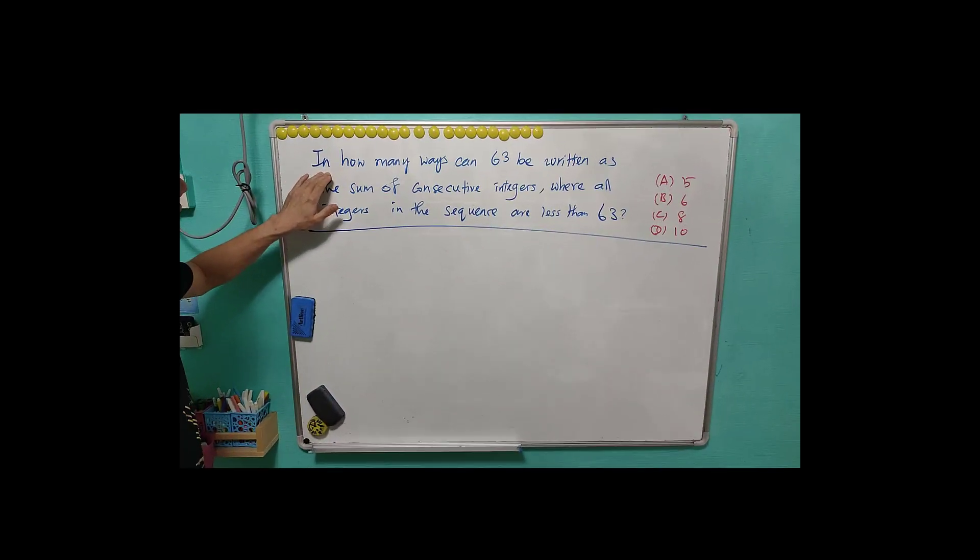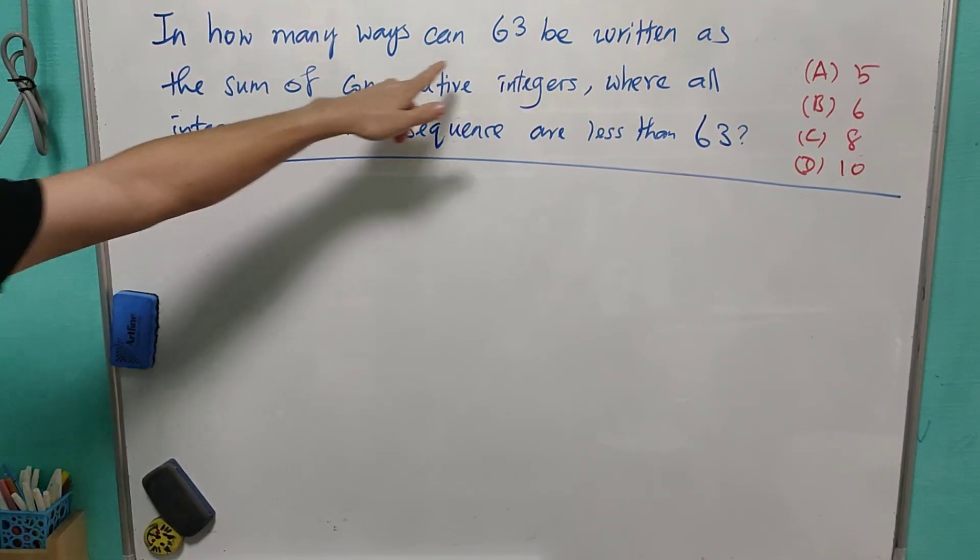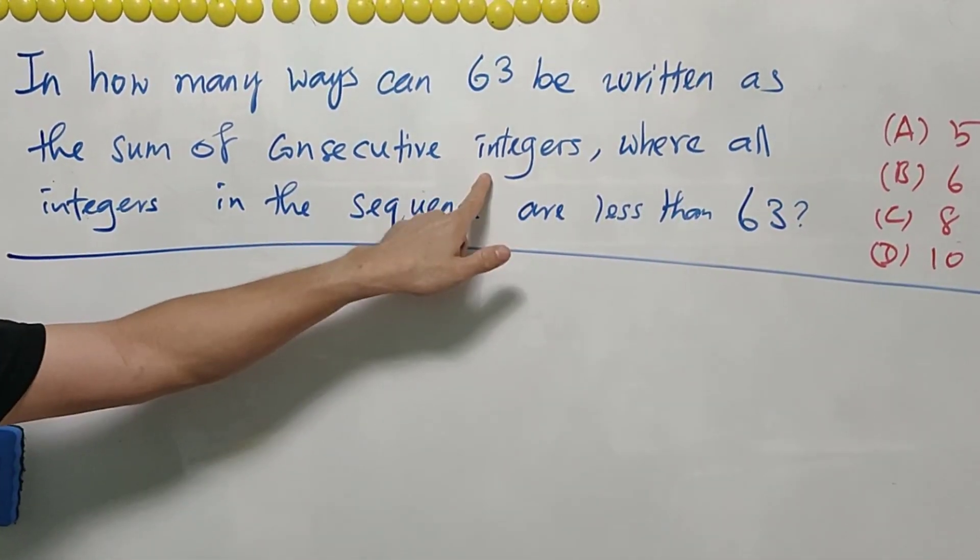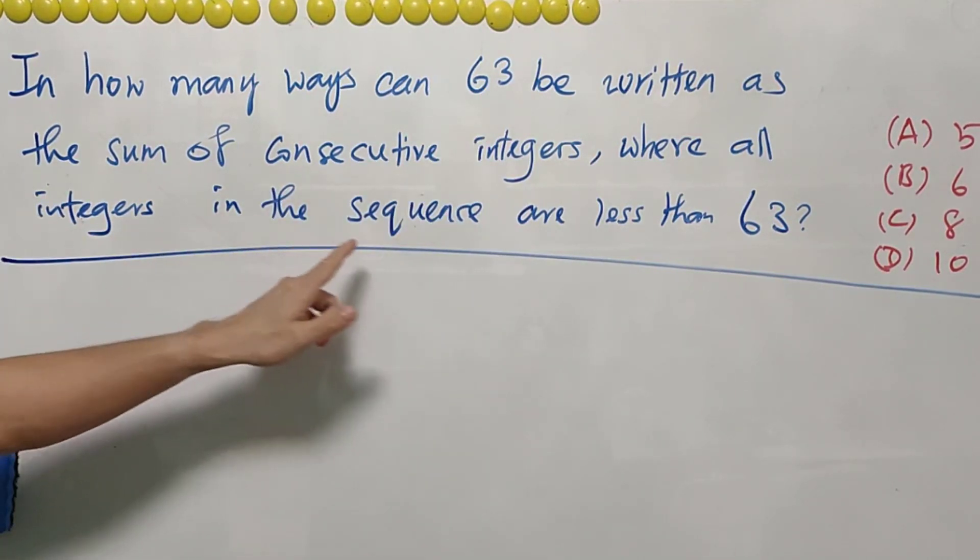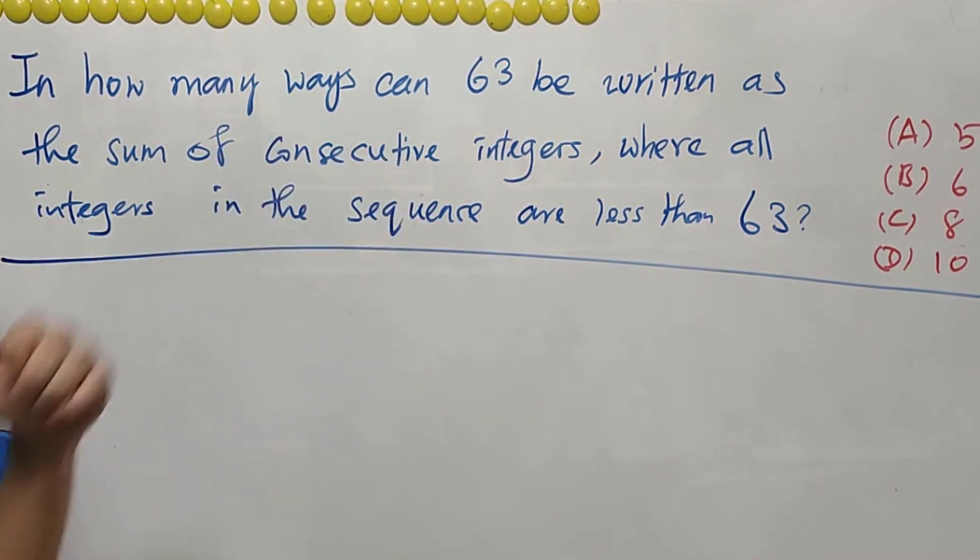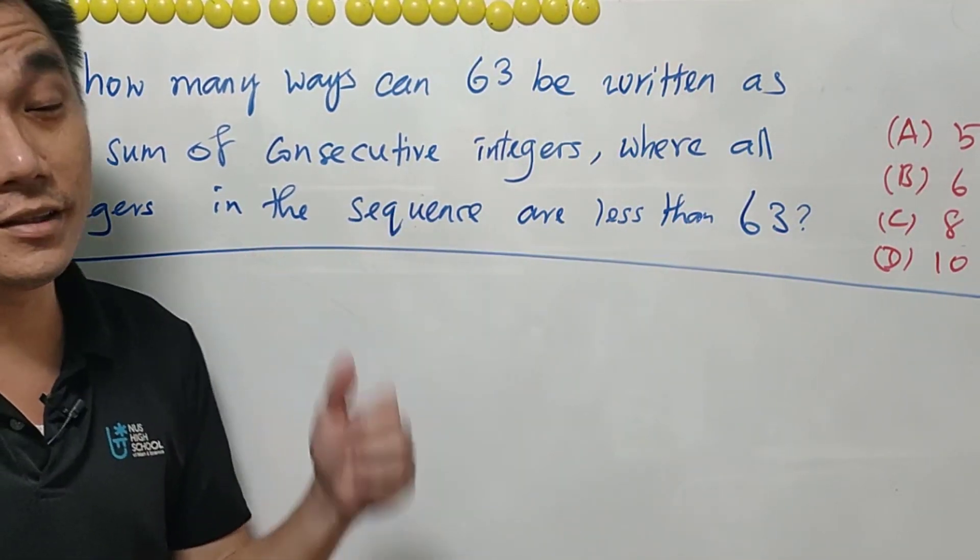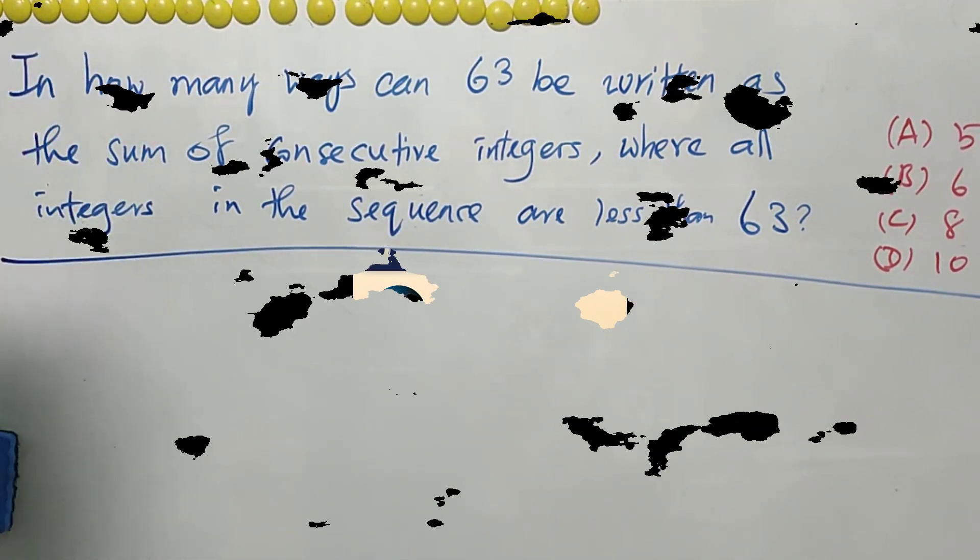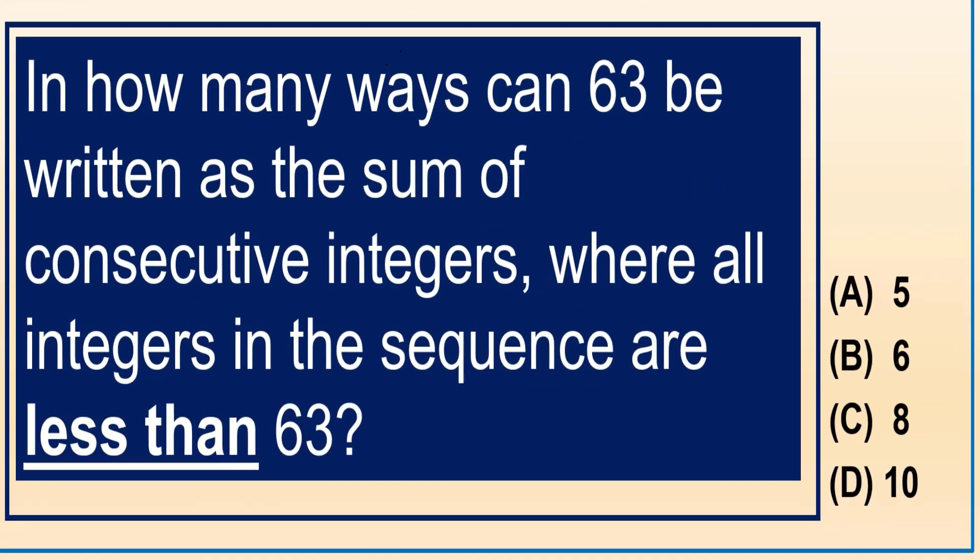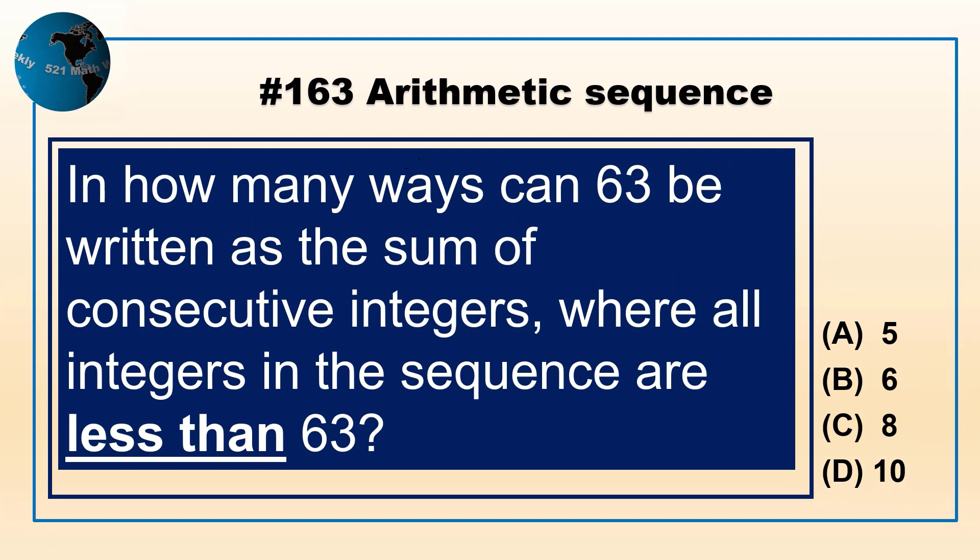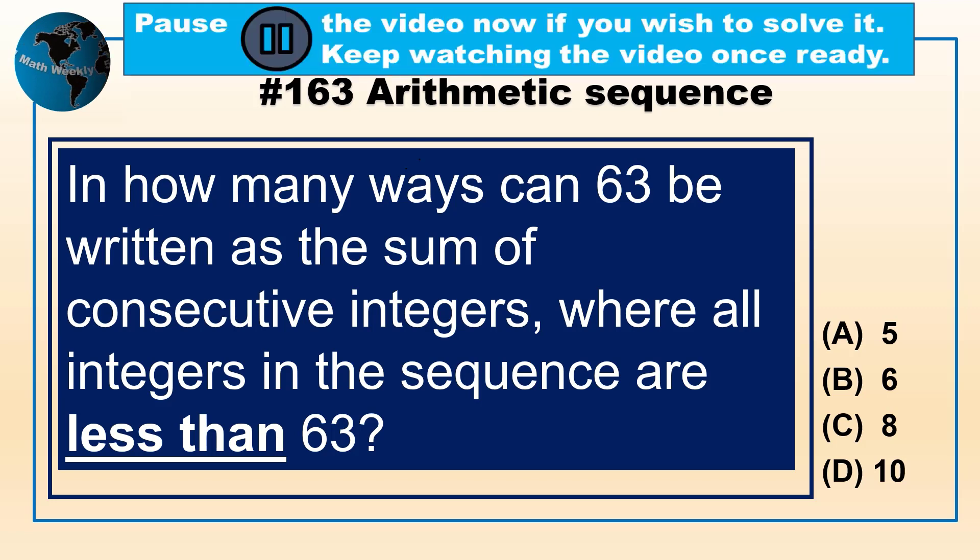For this question, it says in how many ways can 63 be written as the sum of consecutive integers where all integers in the sequence are less than 63. And the options are A: 5, B: 6, C: 8, and D: 10. What do you think? Pause the video now if you wish to solve it. Keep watching the video once ready.